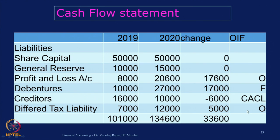For every item in the balance sheet we will assign O, I, F, or CACL. CACL is actually a part of O. This categorization will help us for the preparation of the cash flow statement.